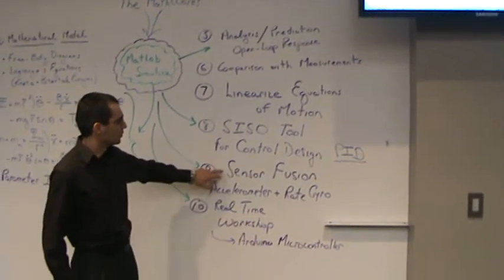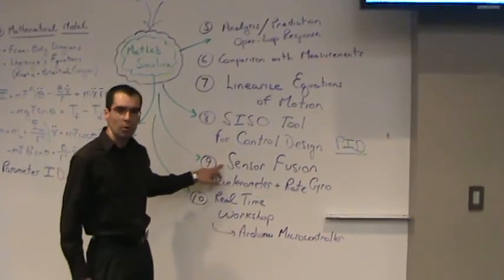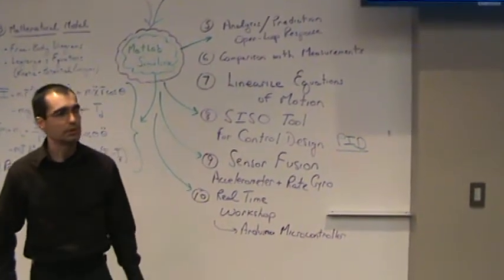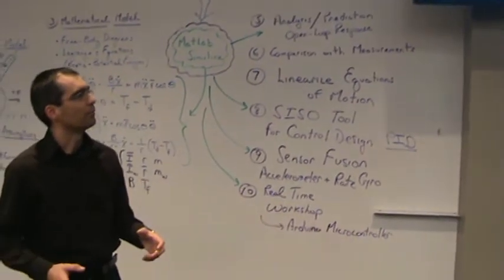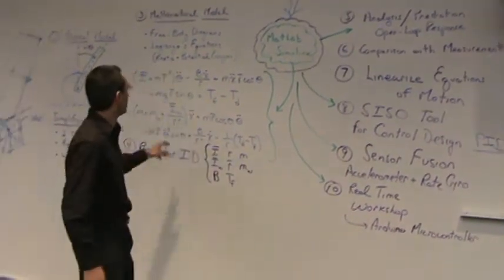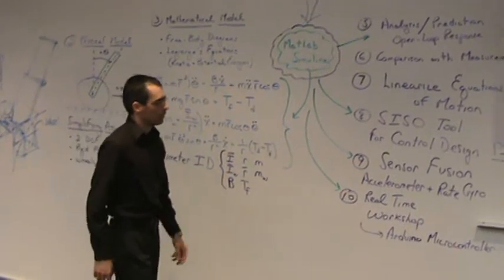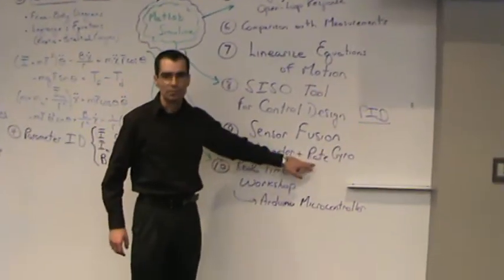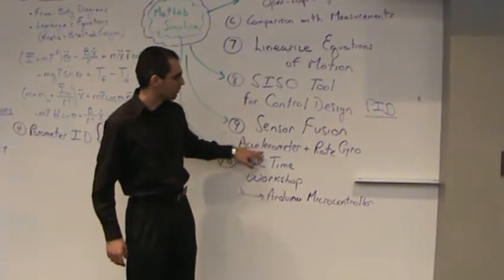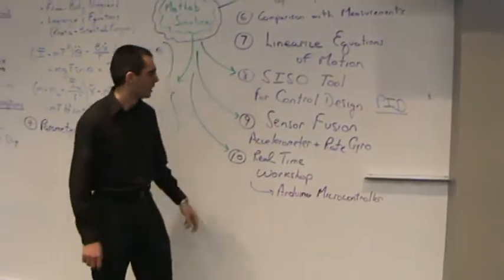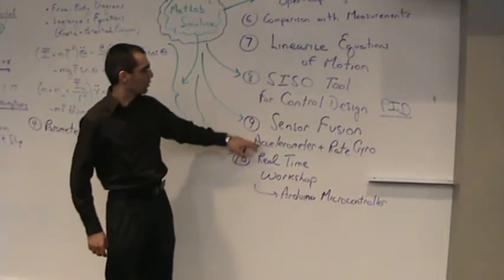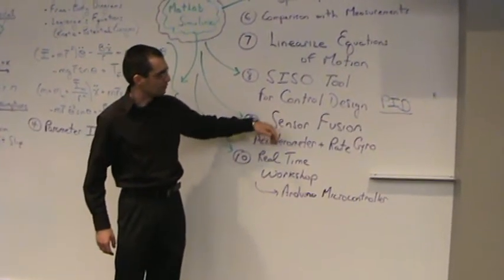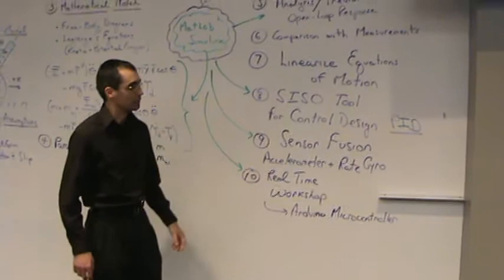In addition to that, we also use Simulink for what we call sensor fusion, which is a combination of two sensors that define the angle theta. One is an accelerometer for low frequency, the other is a gyro for high frequency. We combine those two signals via sensor fusion. You can see that on the screen on the lower left corner.